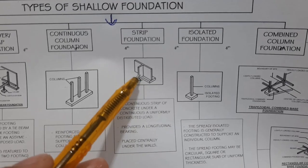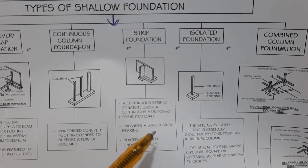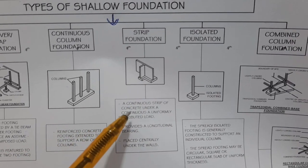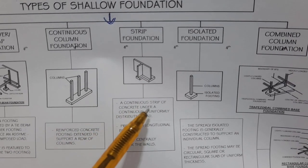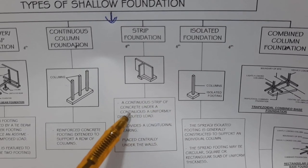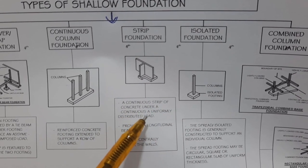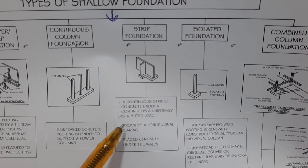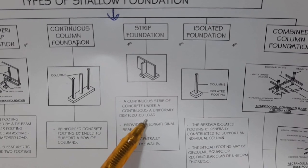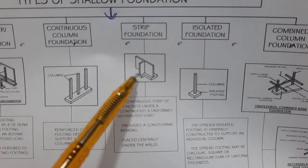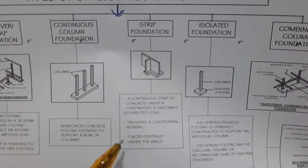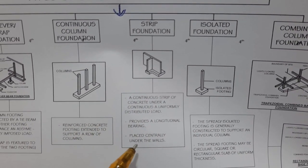The other type is strip footing, also known as strip foundation. It is a continuous strip of concrete under a uniformly distributed load, as you can see here.